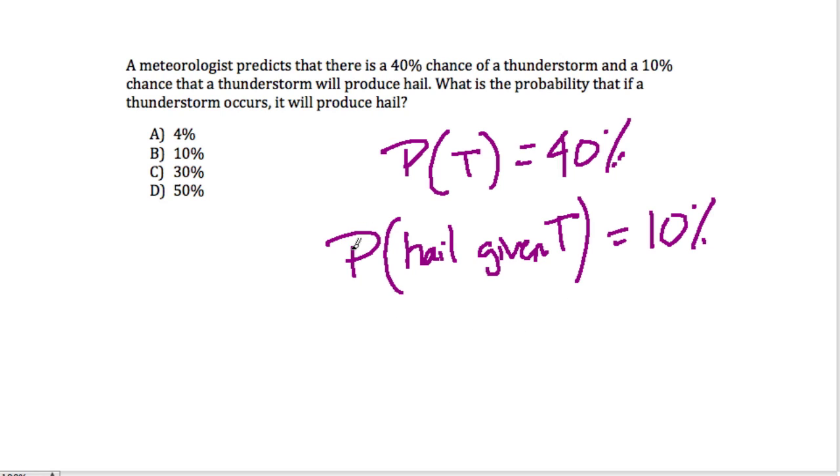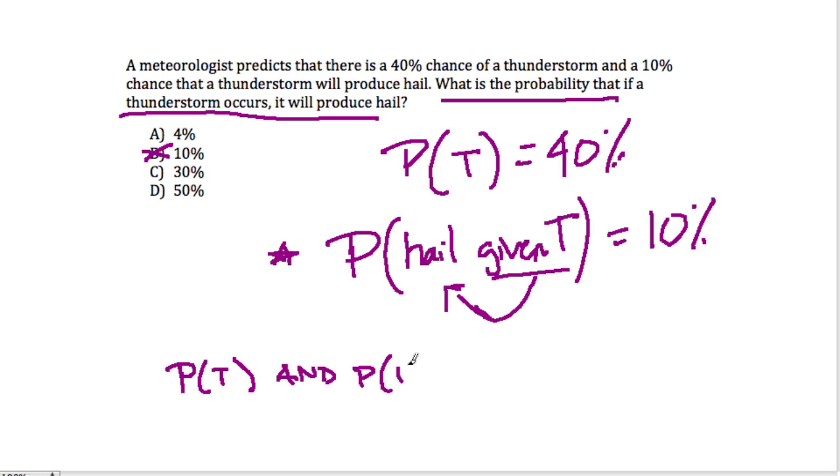What is the probability that if a thunderstorm occurs, it will produce hail? And this is why I don't like it, because the way they're phrasing this, it sounds like the answer is going to be 10%, but it's not. It just sounds like the probability that you already know that there's a thunderstorm, that there's going to be hail. So it sounds like the way they're asking this question, it sounds like they're asking for this probability. But really what they're saying is, what is the probability that it's going to thunderstorm and the probability that it's going to hail, given that there's a thunderstorm.